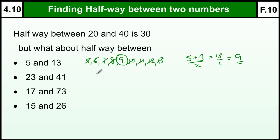So if I want to find halfway between 23 and 41, I do 23 plus 41, which is 64. And I divide that by 2 to get 32.